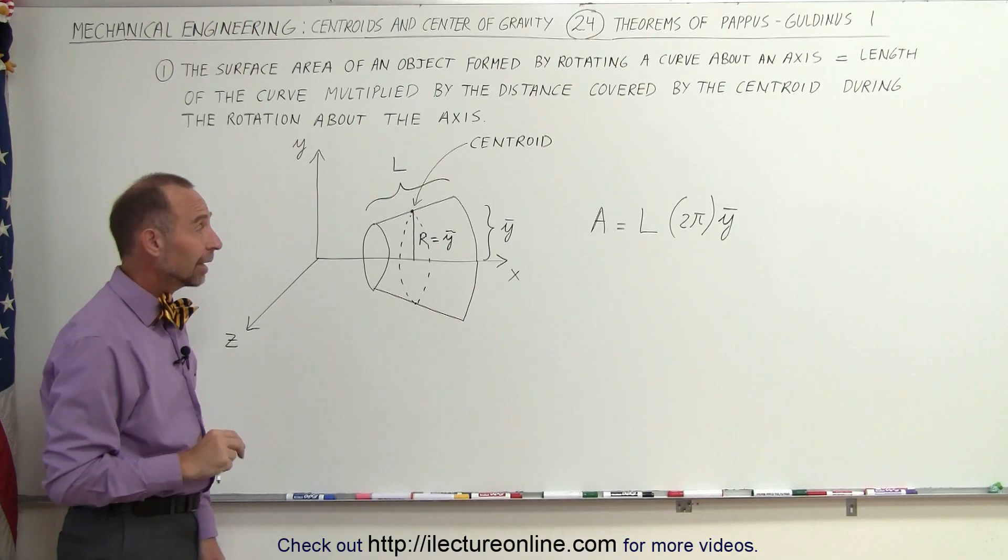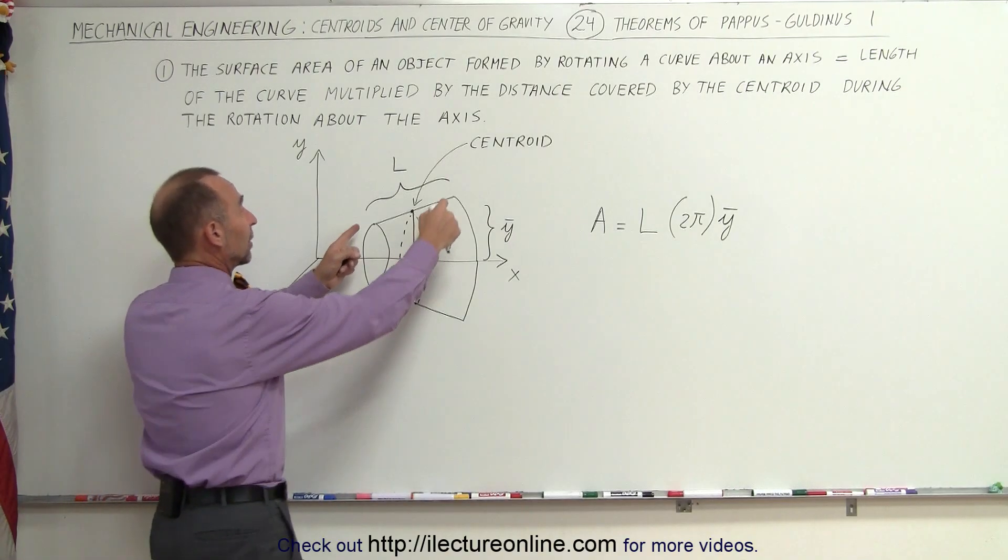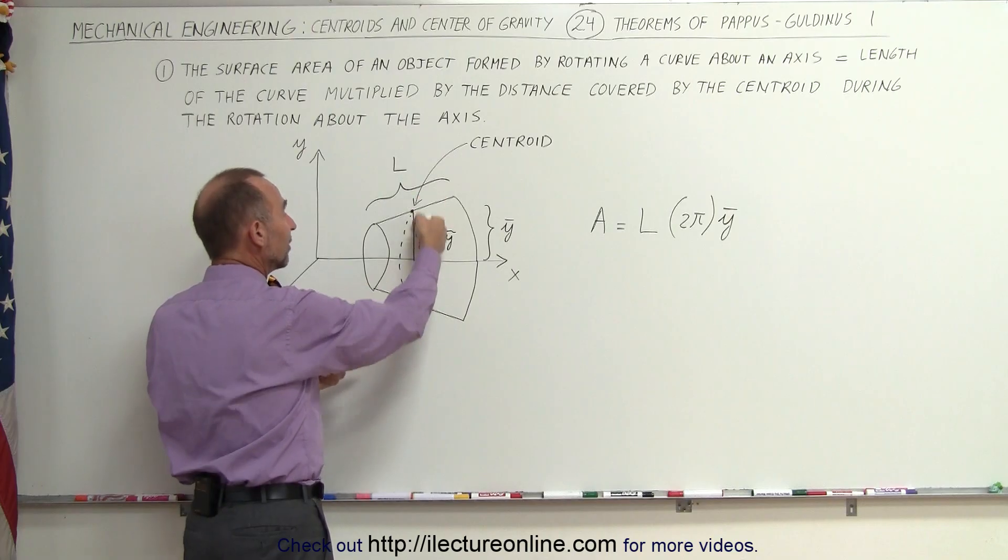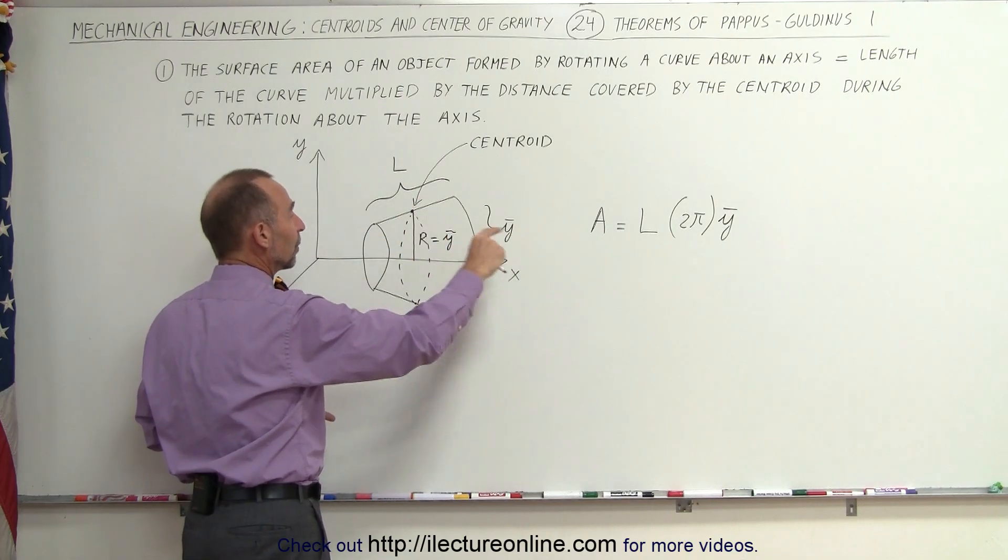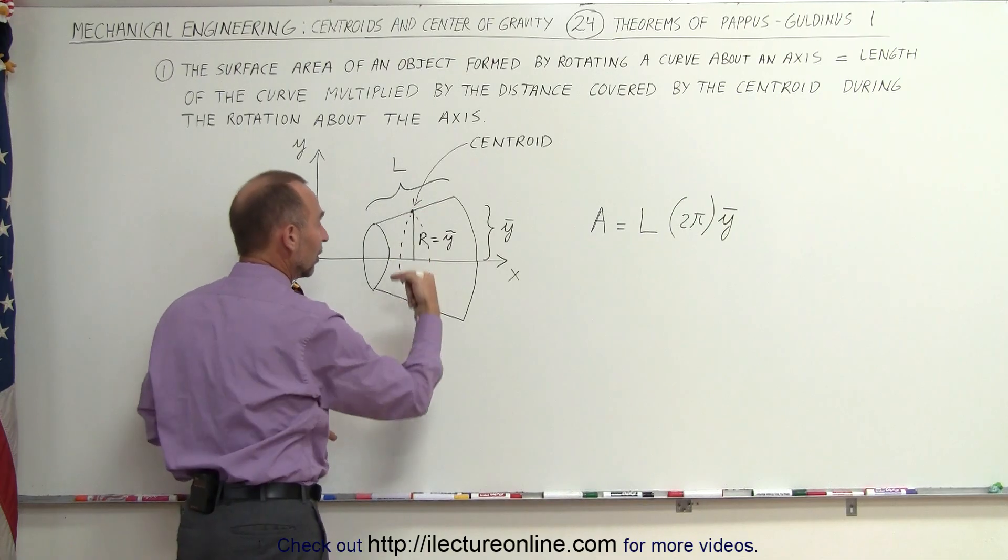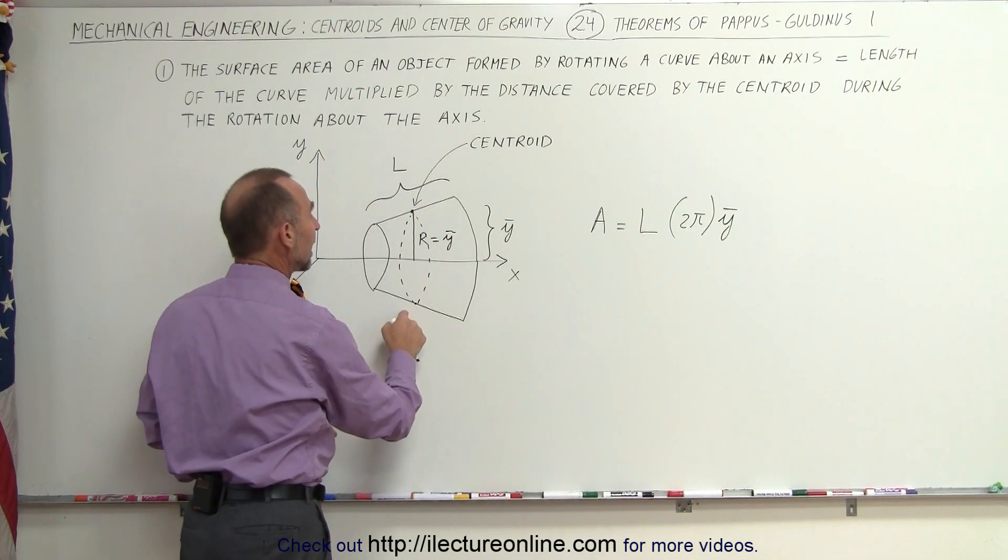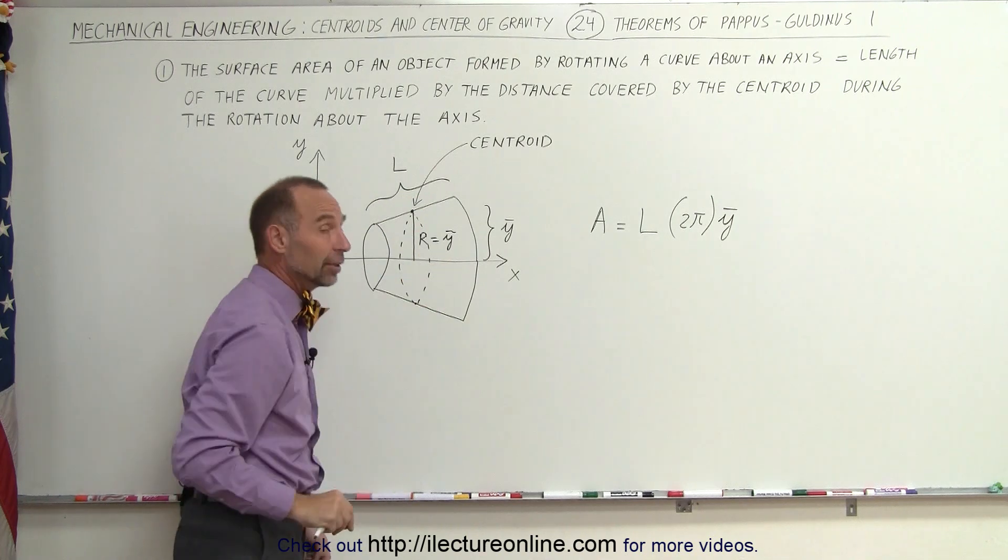That's pretty straightforward. That's pretty easy. All we have to do is figure out what the length is, figure out what the distance is from the x-axis of the centroid, find that distance, multiply 2π times that distance for the path that it takes as it goes around the axis, multiply by the length of the curve and that gives us the surface area.